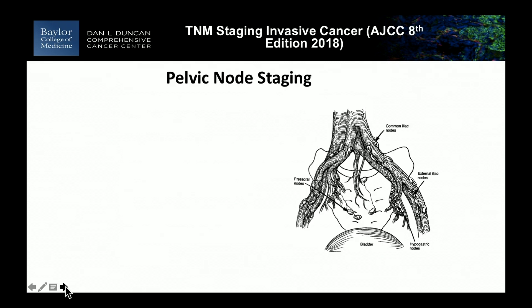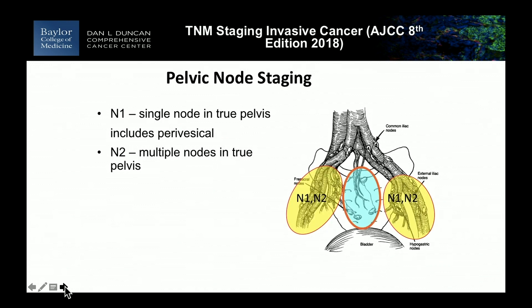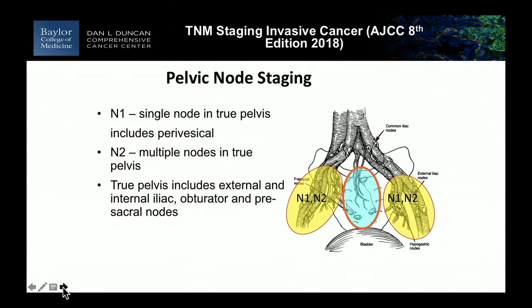The anatomy is familiar to everybody and this is the current staging system. If you have a single node in the true pelvis, it's N1. Multiple nodes in the true pelvis is N2. Nodes in the common iliac region is N3. The true pelvis includes the presacral lymph nodes — there's direct lymphatic drainage from the trigone and posterior wall of the bladder, and you can see metastatic disease in that region.